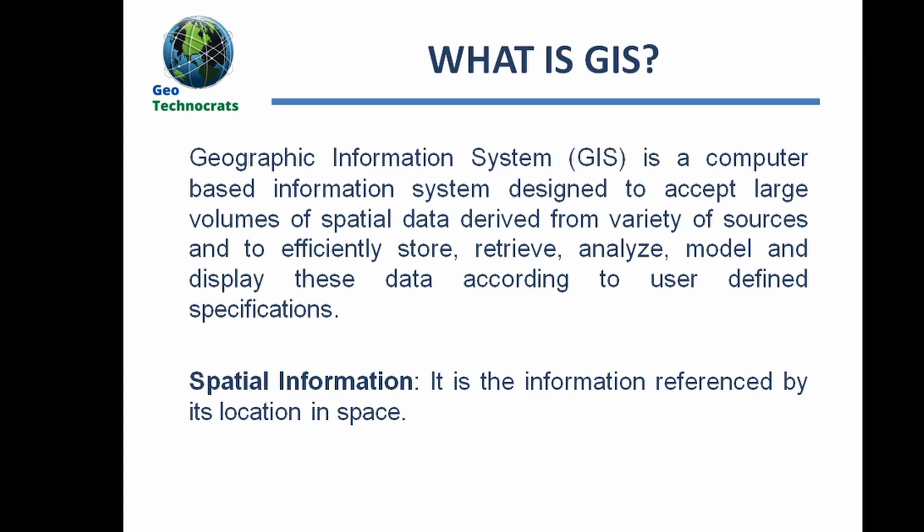Now what exactly is GIS? A Geographic Information System is a computer-based information system designed to accept large volumes of spatial data derived from a variety of sources, and to efficiently store, retrieve, analyze, model, and display these data according to user-defined specifications. Spatial data, or spatial information, is information referred to by its location in space — it has a specific latitude and longitude. So any data with a specific latitude and longitude is known as spatial data, and in GIS we deal with spatial data.